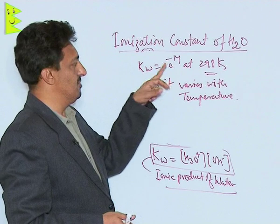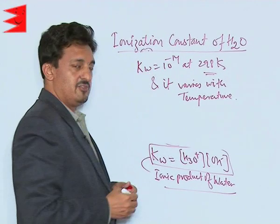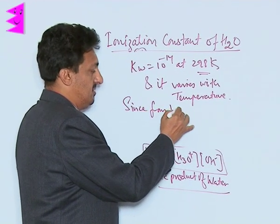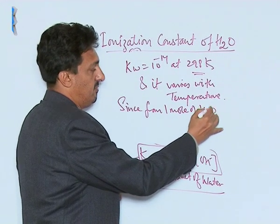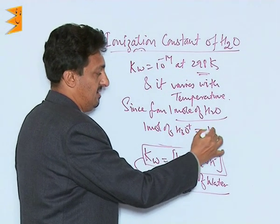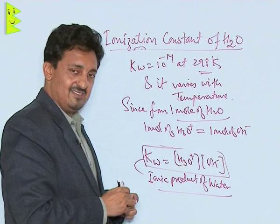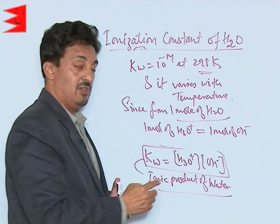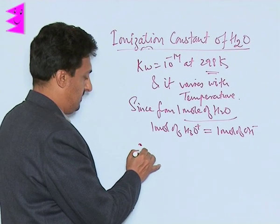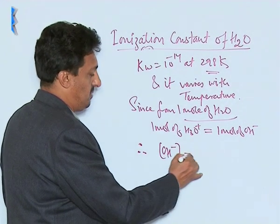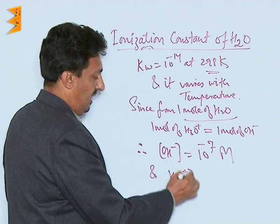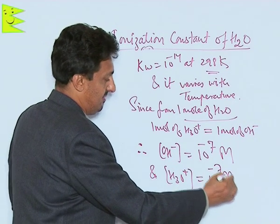Kw is equal to 10⁻¹⁴ — this value is very important and should always be remembered. We also know that from one mole of water, one mole of H⁺ ion and one mole of OH⁻ ions are generated. So the concentration of these two ions in water will always be the same. Therefore, the concentration of OH⁻ ions will be 10⁻⁷ M and the concentration of H₃O⁺ ions will also be 10⁻⁷ M.